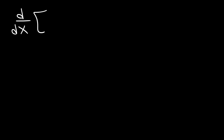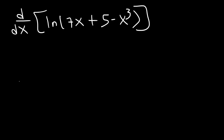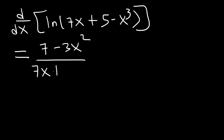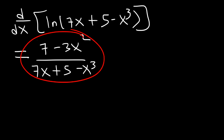Go ahead and try this problem: differentiate the natural log of 7x plus 5 minus x cubed. Let's differentiate the inside function. The derivative of 7x is 7, the derivative of a constant is 0, and the derivative of negative x cubed is negative 3x squared — divided by the original expression on the inside, which is 7x plus 5 minus x cubed. So that's the answer for this example.